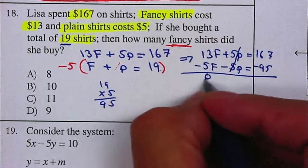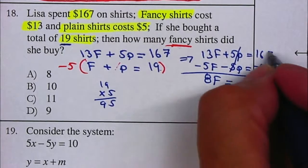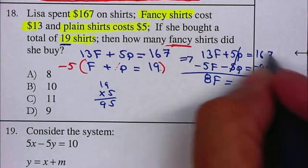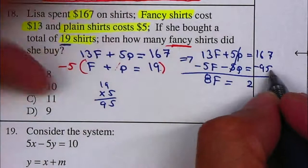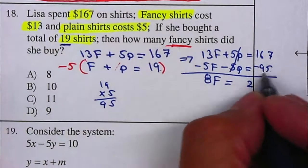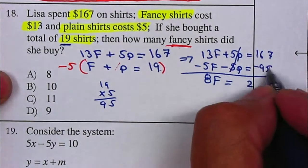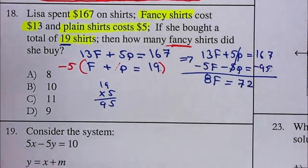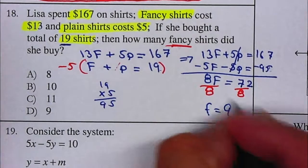The P's cancel, so 8F equals 72. Now, remember that whenever you're doing this operation, your bigger number has to be on top. 167 is bigger than 95, so I can subtract. 7 minus 5 is 2, 16 minus 9 is 7. I'm going to divide by 8 on both sides, so F equals 9.